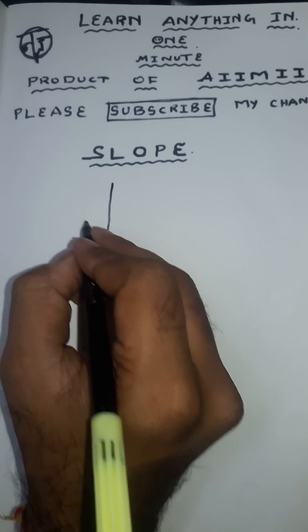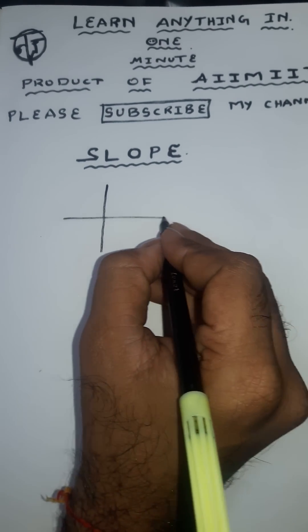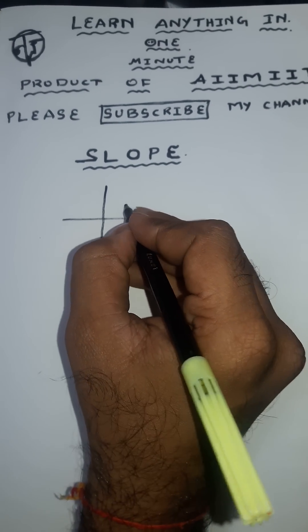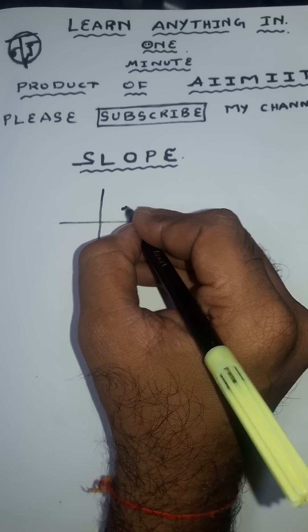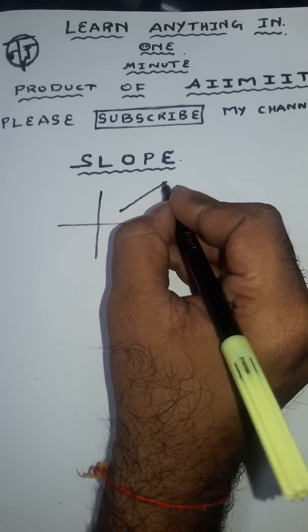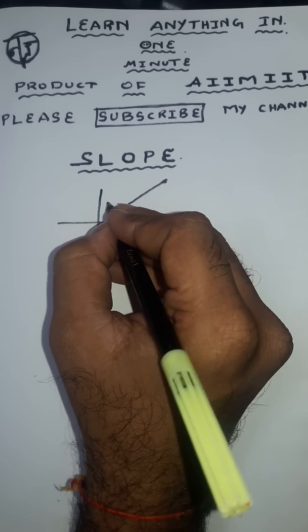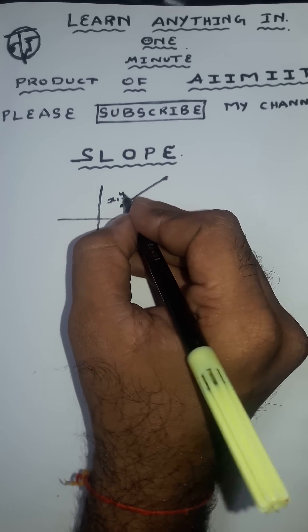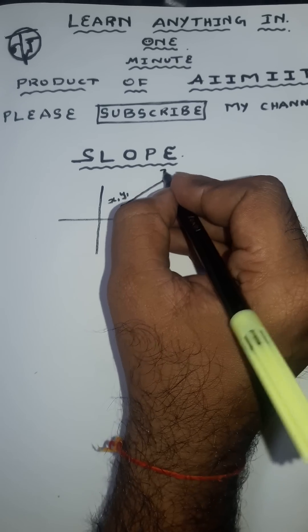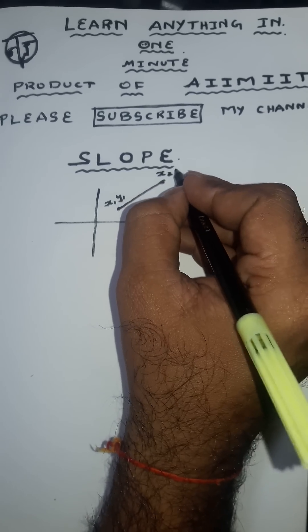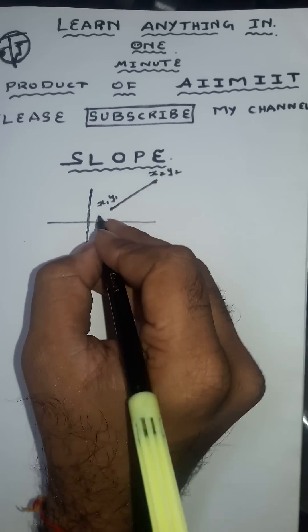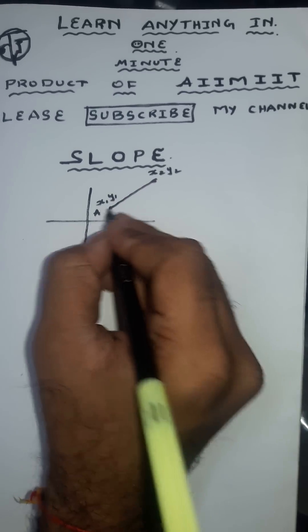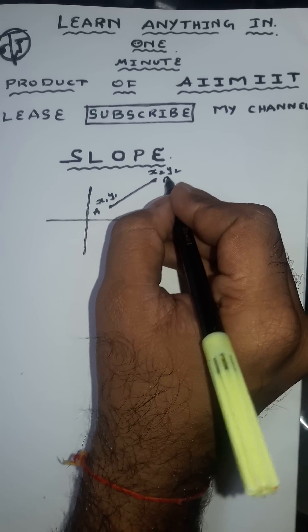Take coordinate axis. This is called slope. Imagine x1, y1, x2, y2, A, P.